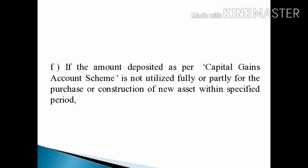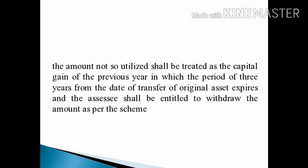The sixth case: if the amount deposited as per the Capital Gains Account Scheme is not utilized fully or partly for the purchase or construction of the new asset within the specified period, the amount not so utilized shall be treated as the capital gain of the previous year in which the period of 3 years from the date of transfer of the original asset expires, and the assessee shall be entitled to withdraw the amount as per the scheme.